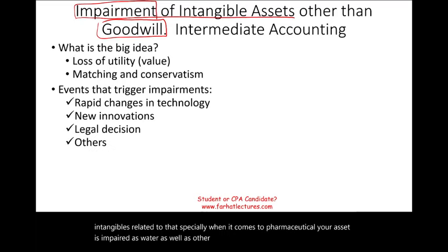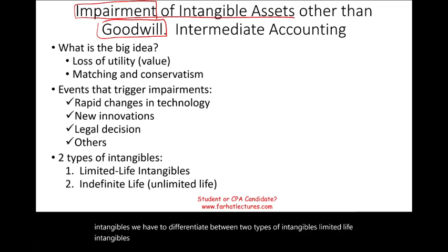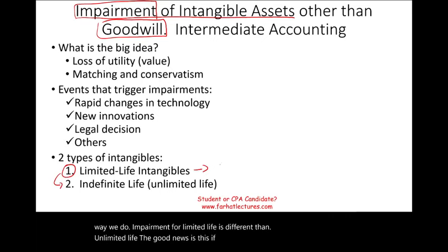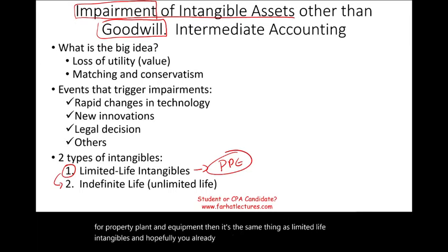When doing impairment for intangibles, we must differentiate between two types: limited life intangibles and indefinite life intangibles. The way we do impairment for limited life is different from indefinite life. If you already know how to do impairment for property, plant, and equipment, then it's the same thing as limited life intangibles.